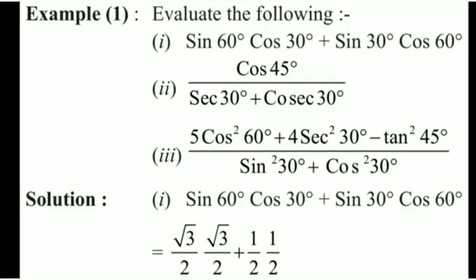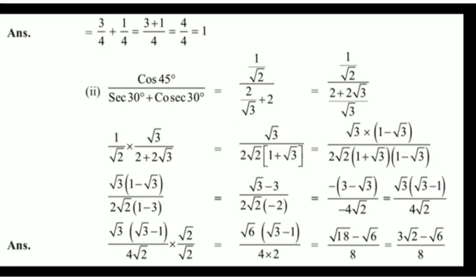Doing the multiplication: √3 × √3 = 3, and 2 × 2 = 4, so the first term becomes 3/4. The second term is 1 × 1 = 1 and 2 × 2 = 4, so it becomes 1/4. Adding 3/4 and 1/4 by taking the LCM, we get (3 + 1)/4 = 4/4 = 1.